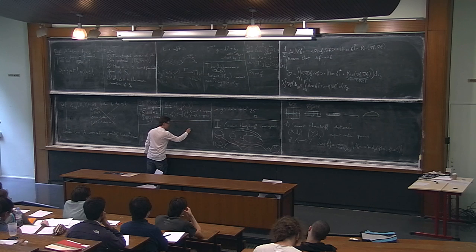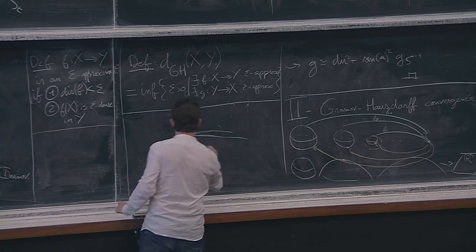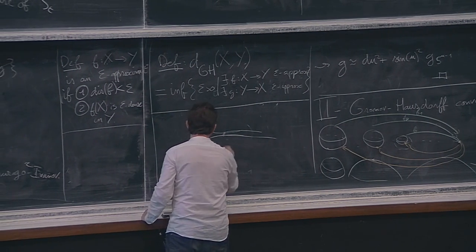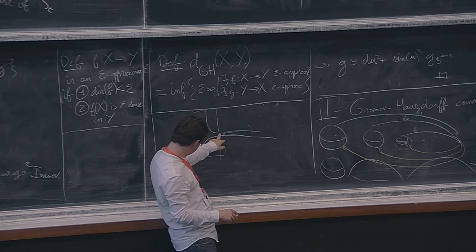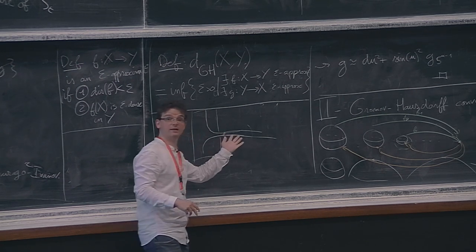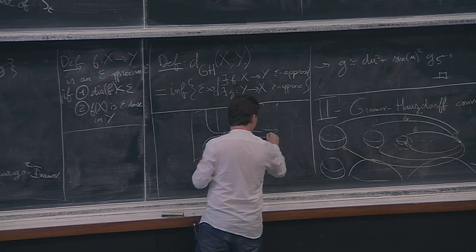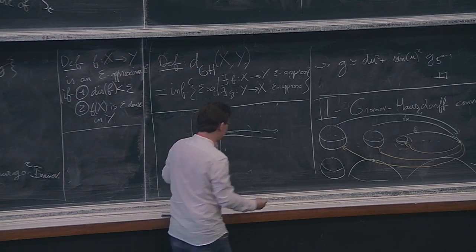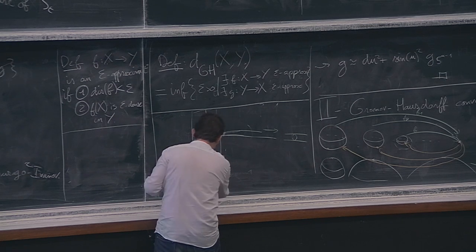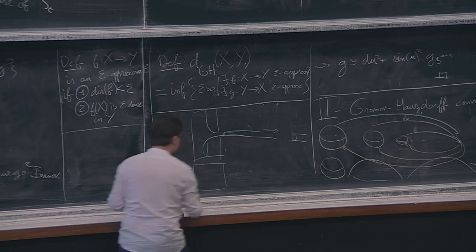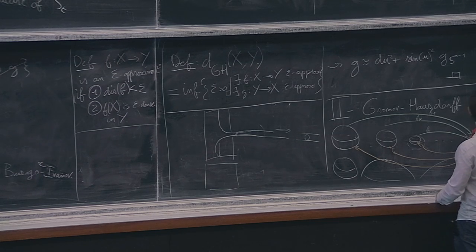Consider a space with a cylindrical end glued to a plane. Looking from far away in one direction you see a cylinder, and in the other direction you see a plane. So you need to fix base points to talk about convergence of non-compact spaces.